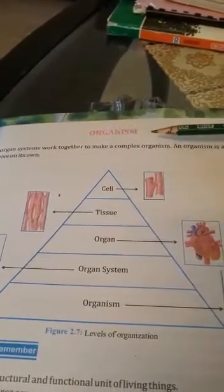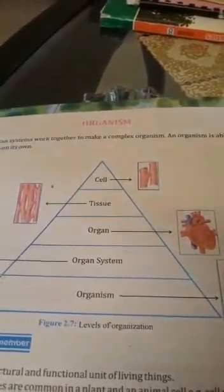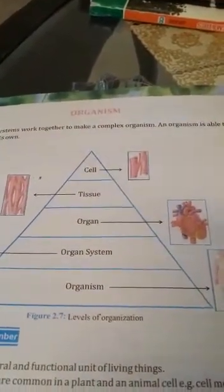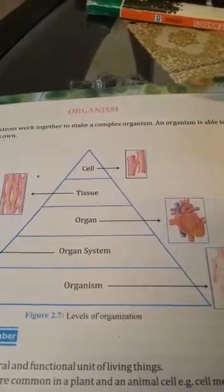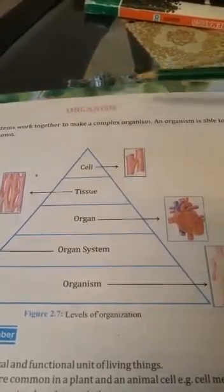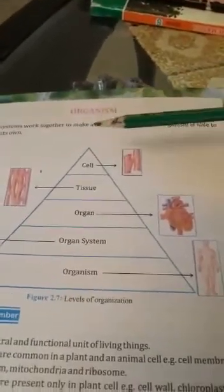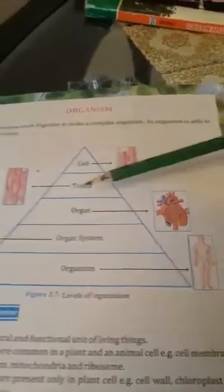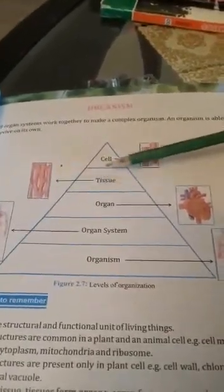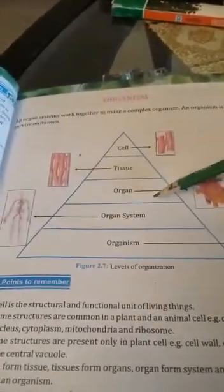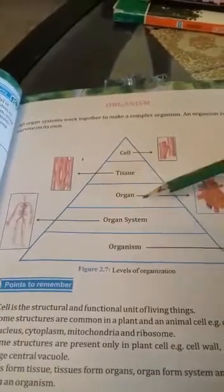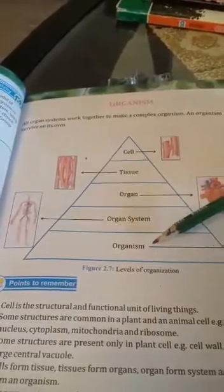Our next topic is organism. All organ systems work together to make a complex organism. When all organ systems work together, they form an organism, and an organism is able to survive on its own. Cells combine and work together to make tissues, different tissues work together to make an organ, different organs work together to make an organ system, and different organ systems work together to make an organism.